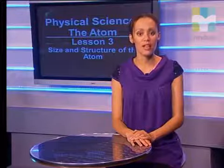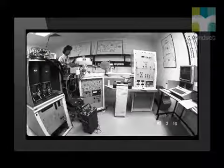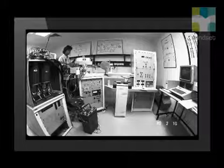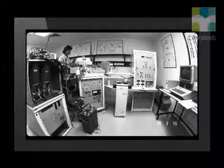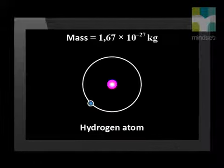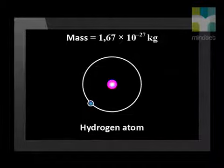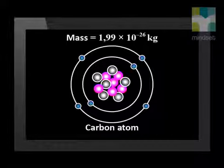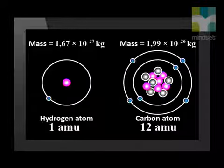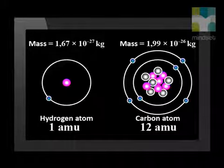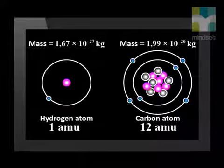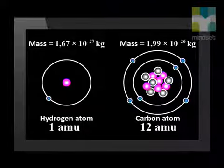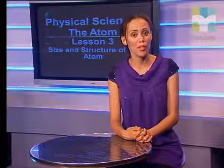Since the exponent is negative, this tells us that this is a very small number. Now let's discuss the mass of an atom. It is possible with a special instrument called a mass spectrometer to determine the mass of a hydrogen atom or the mass of a carbon atom. The mass of a hydrogen atom is 1.67 times 10 to the power negative 27 kilograms. The mass of a carbon atom is 1.99 times 10 to the power negative 26. But these numbers are very small and it is difficult to compare how much bigger the mass of one atom is to another. So we need a more convenient way to measure the mass of an atom. This unit is called the atomic mass unit, AMU. Let's cross over to Diyasha to find out more about the unit and the nucleus of the atom.